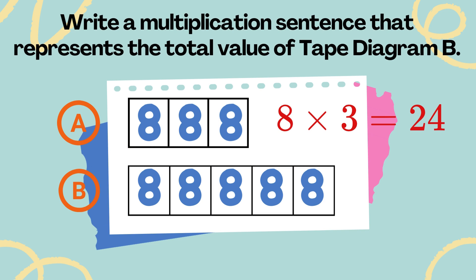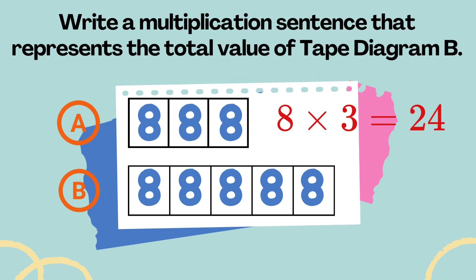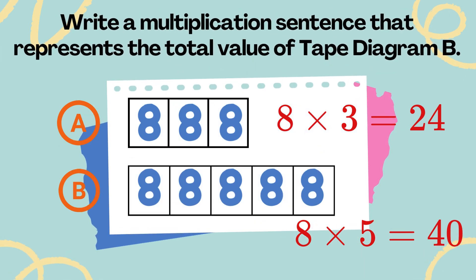Write a multiplication sentence that represents the total value of tape diagram B. There are five units at 8 each, so 8 times 5 equals 40. The total value of tape diagram B is 40.